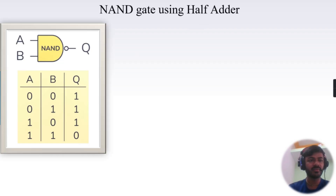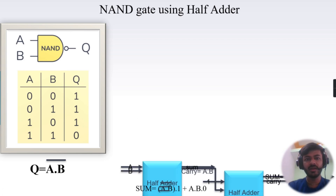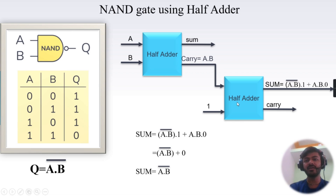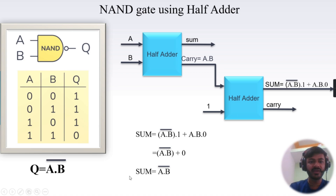Now we'll implement the NAND gate using a half adder. You can see the truth table of the NAND gate — it is nothing but the inverse of the AND gate. The logical expression is Q = (A AND B)'. To implement this NAND gate, I have taken two half adders. The first half adder has inputs A and B, and outputs sum and carry — the sum gives XOR and the carry gives AND. We use the carry output as an input to the second half adder, where one of the inputs is the carry (A AND B) and the other input is 1.